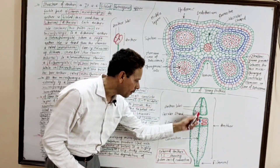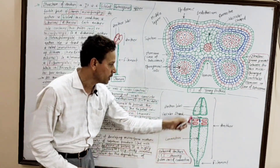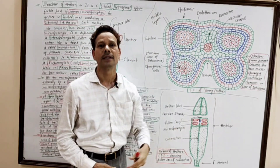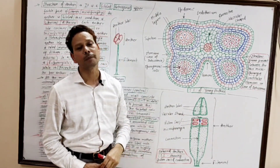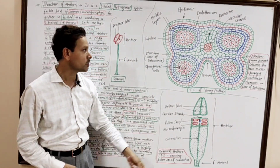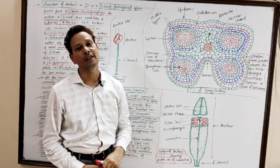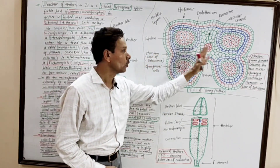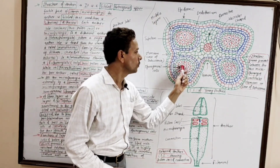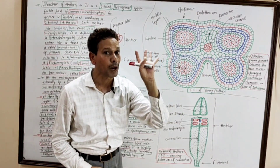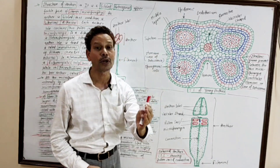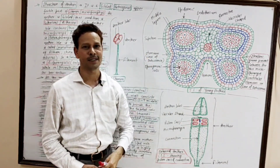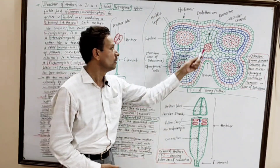Both anther lobes are separated by a common sterile strand called the connective. In the connective, there is a vascular bundle or vascular strand that provides nourishment — water and food supply — to the anther lobes. Dear students, this is the transverse section of a young anther. Each anther has two anther lobes, and in both lobes there are four pollen chambers, pollen sacs, or microsporangia — the tetrasporangiate condition. Each microsporangium has two parts.